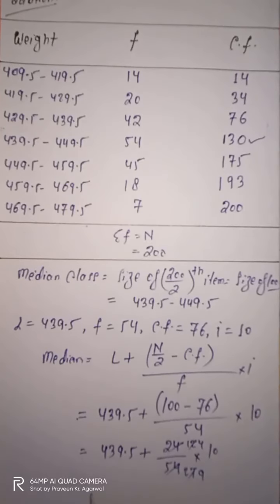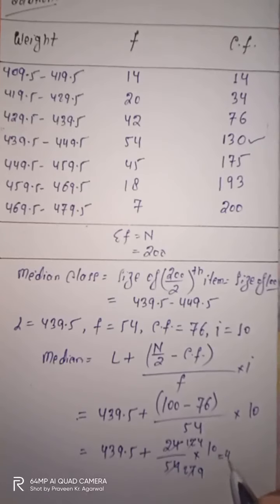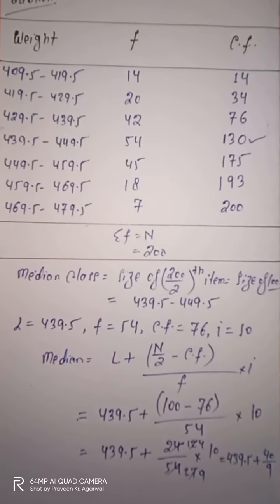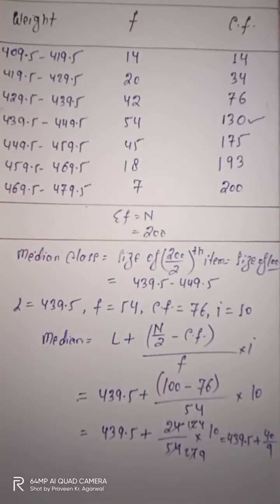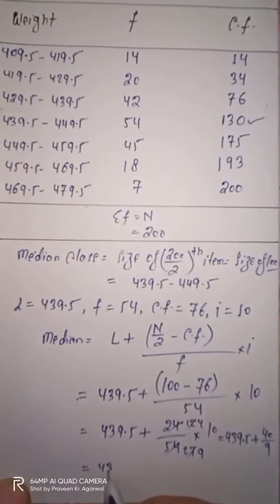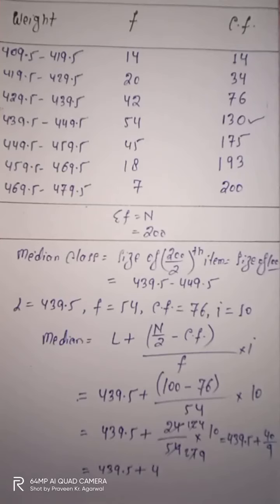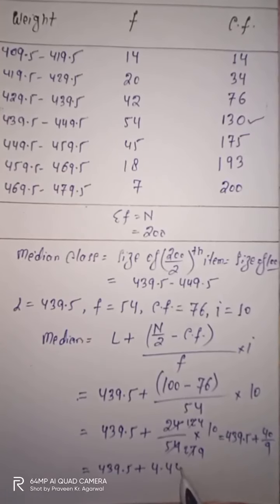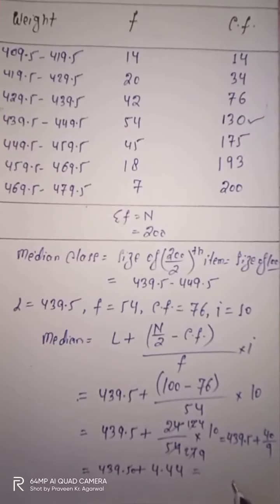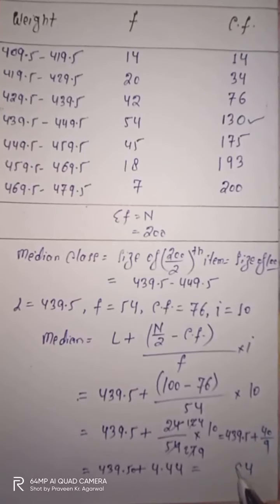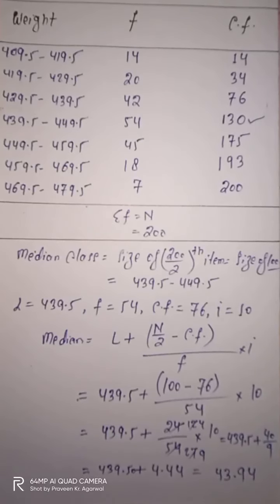This simplifies to 439.5 + [24/54] × 10 = 439.5 + 240/54 = 439.5 + 40/9. Dividing 40 by 9 gives approximately 4.44. So the median equals 439.5 + 4.44 = 443.94. This is the median of the given continuous series.